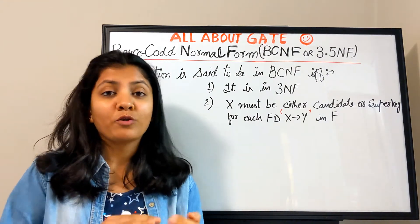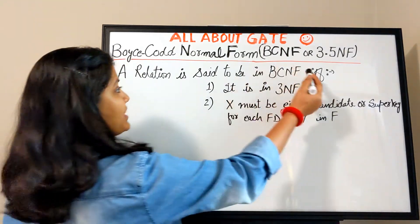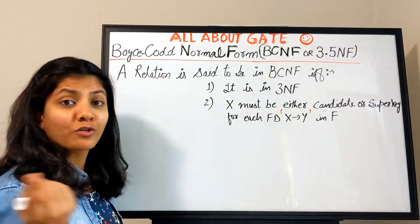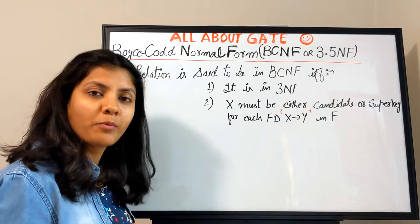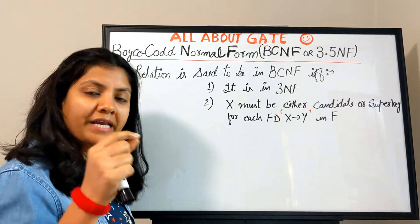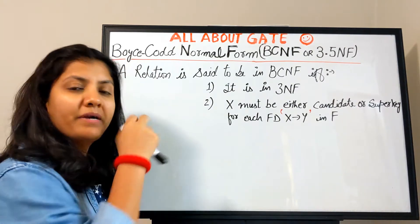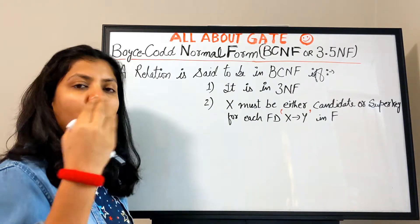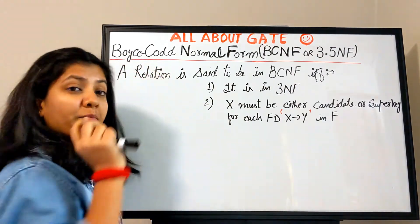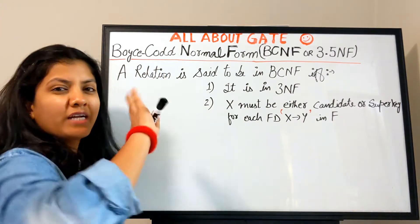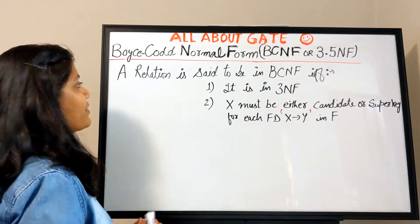So far we had first, second, and third — why not fourth? BCNF is sometimes also called the 3.5 normal form. It is a little stricter than third normal form. The first, second, and third normal forms were defined by Codd, but BCNF was defined by two persons: Boyce and Codd. That is why it is called BCNF.